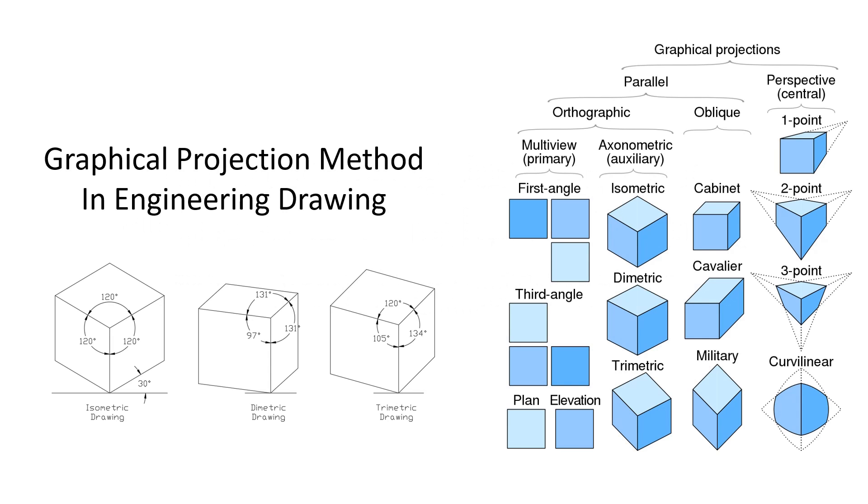We have various graphical projection methods in engineering drawing. The classification of projection methods can be broadly categorized into two groups: Parallel Projection and Perspective Projection.